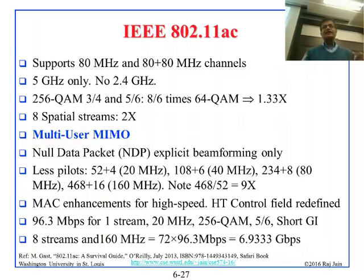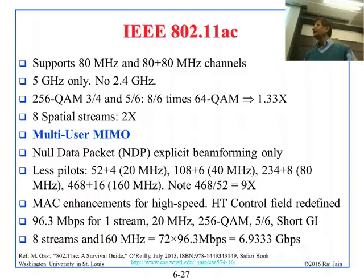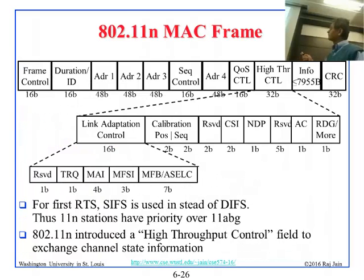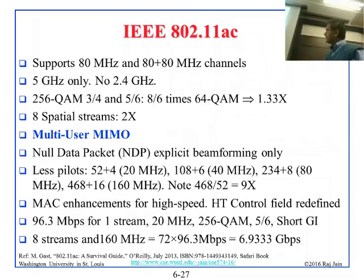So with 160 megahertz, we are doing 8 times the bandwidth of 20 megahertz, and getting 9 times more subcarriers, giving roughly 9x gain from bandwidth alone. When you multiply all these things together — the 8 spatial streams, the 256-QAM gain of 1.33x, the 8x bandwidth, the beamforming — that's how you get roughly 72 times the base rate, which is basically 6.9 gigabits per second with 802.11ac. The HT control field is redefined for 802.11ac. For one stream at 20 megahertz with 256-QAM and short GI, you get 96.3 megabits; with 8 streams and 160 megahertz — 72 times — you get 6.9 gigabits.